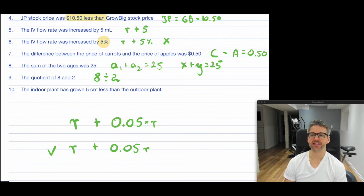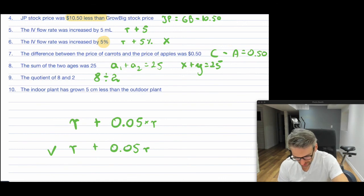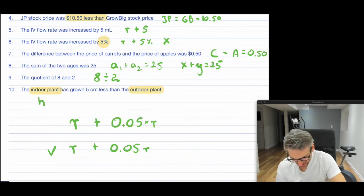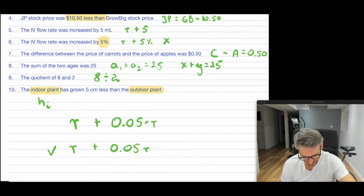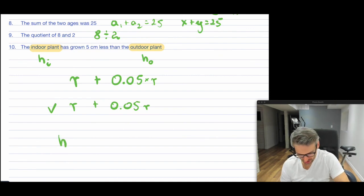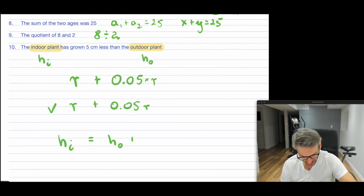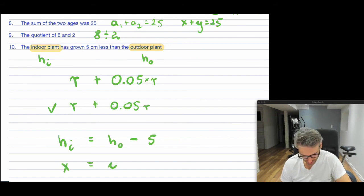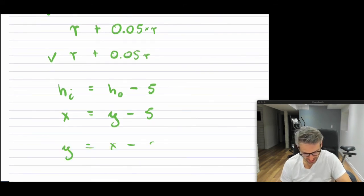Question ten: "The indoor plant has grown 5 centimeters less than the outdoor plant." So this must be about the height of the plants. Let's say the height of the indoor plant is H subscript i, and the outdoor plant is H subscript o. It has grown 5 centimeters less than the outdoor one: H_i equals H_o minus 5. Some people might write x equals y minus 5 — they're all the same; you pick your variables as you choose.